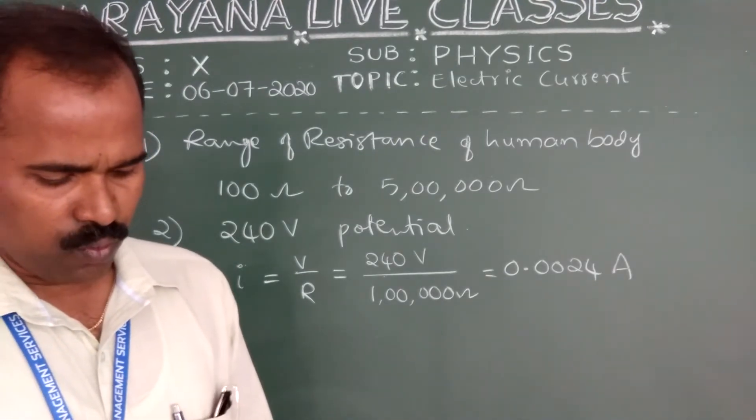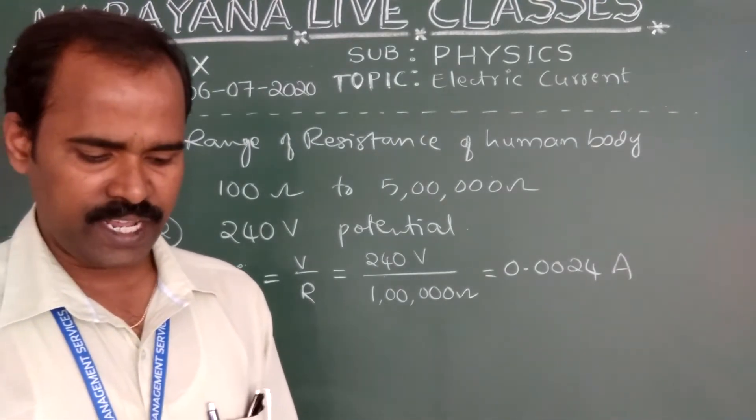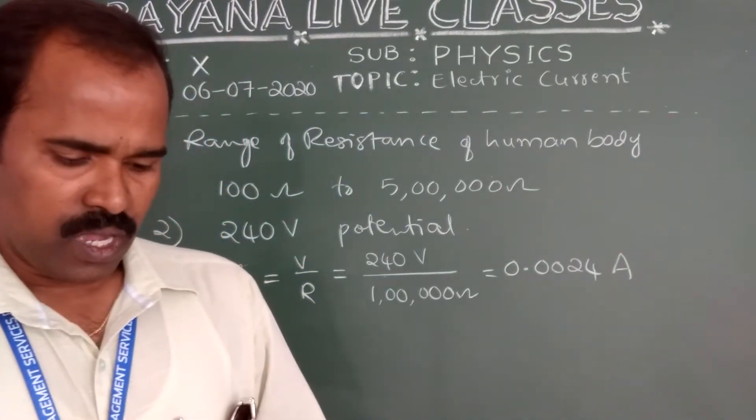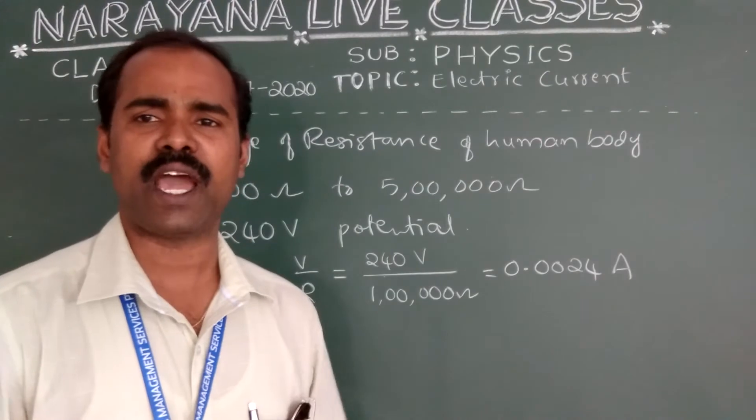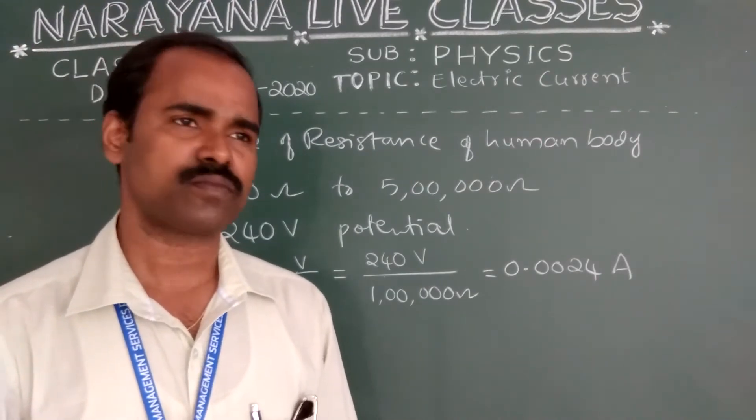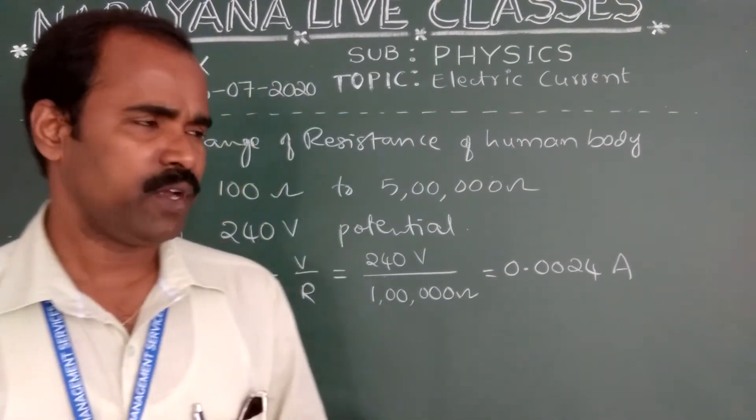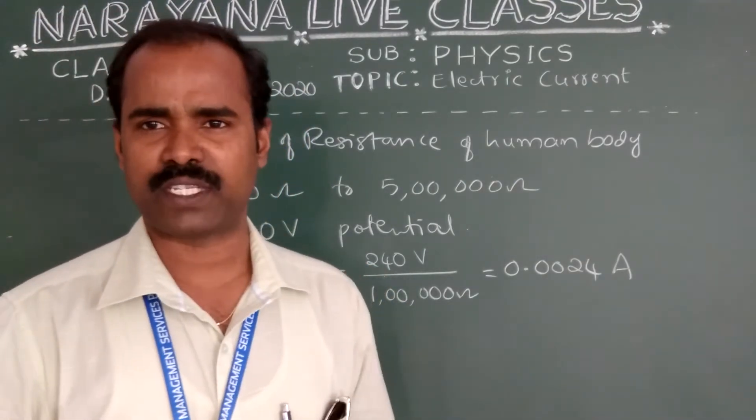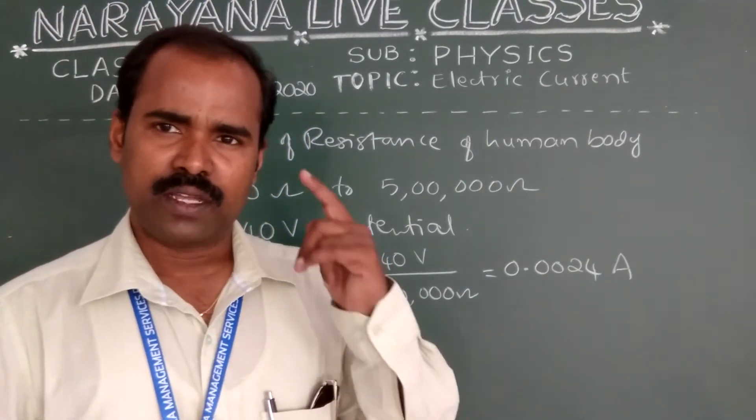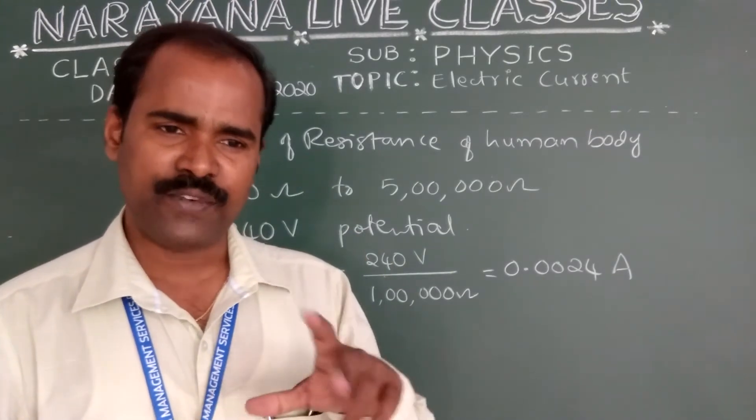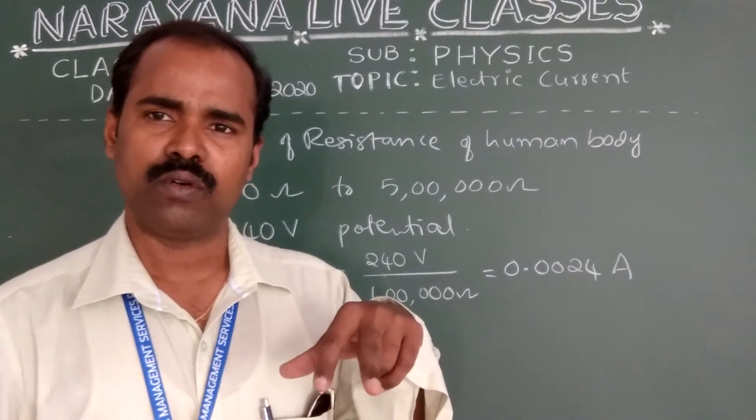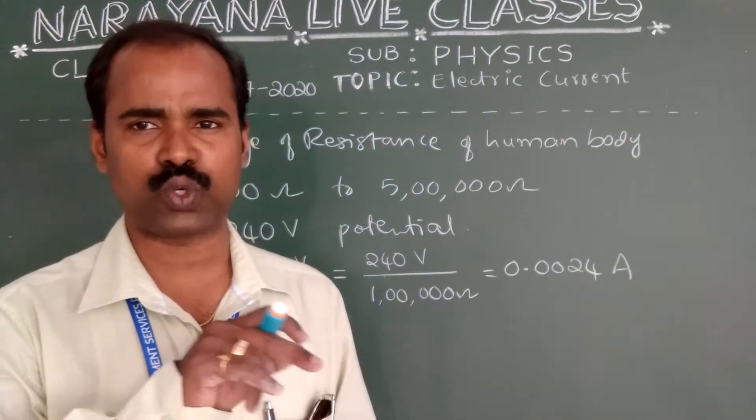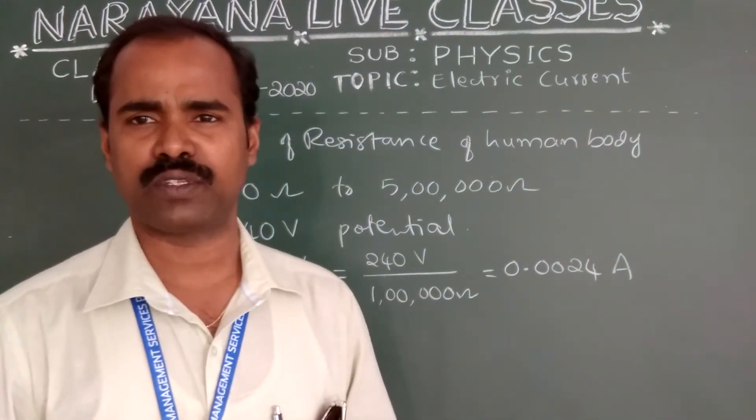Next question: why does bird not get shock when it stands on a high voltage wire? See, generally, between the two poles, the electrical wires will present. Each and every wire, the difference in any two wires, which is equal to 240 volts. That is, the potential difference between the two wires is 240 volts.